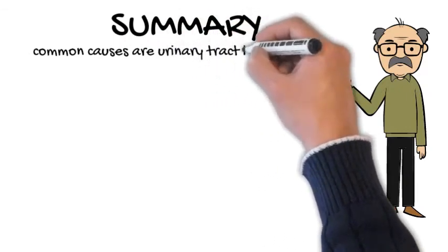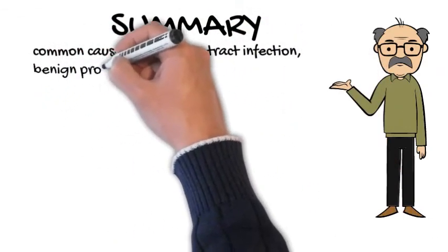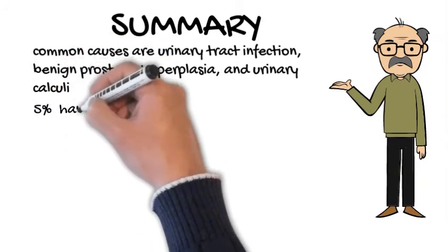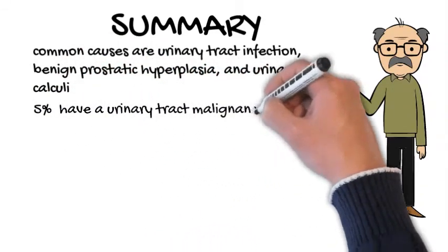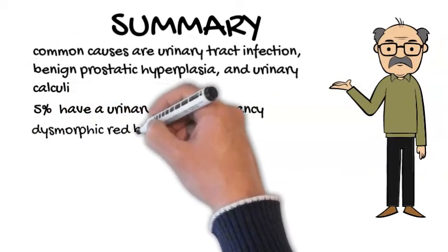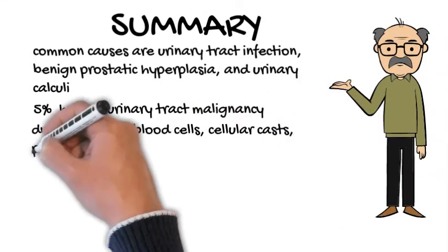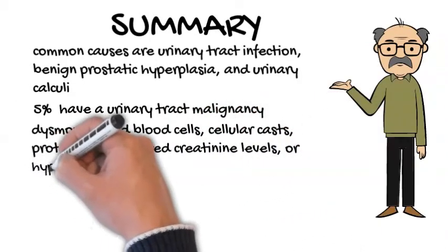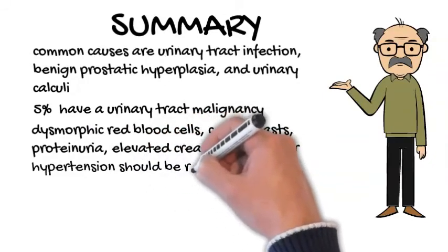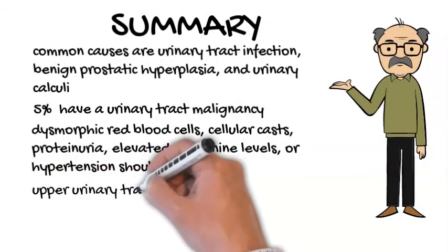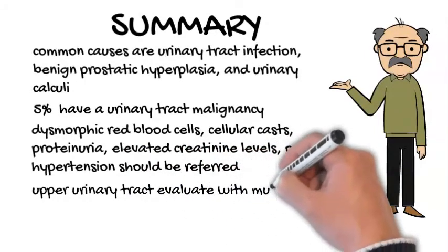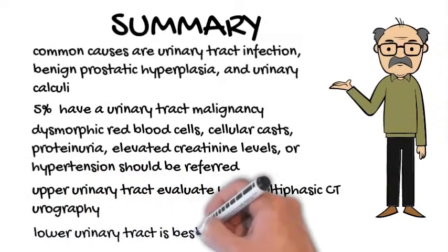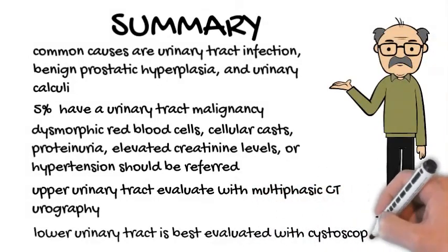In summary, the most common causes of microscopic hematuria are urinary tract infection, benign prostatic hyperplasia, and urinary calculi. However, up to 5% of patients with asymptomatic microscopic hematuria are found to have a urinary tract malignancy. Dysmorphic red blood cells, cellular casts, proteinuria, elevated creatinine levels, or hypertension in the presence of microscopic hematuria should prompt concurrent nephrologic and urologic referral. The upper urinary tract is best evaluated with multiphasic computed tomography urography, which identifies urinary calculi and renal lesions. The lower urinary tract is best evaluated with cystoscopy for benign prostatic hyperplasia and bladder masses.